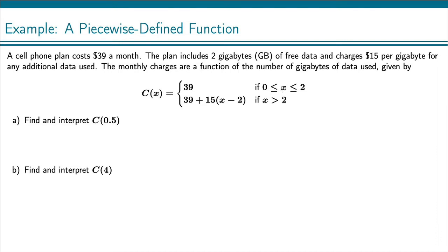That means that whatever number I plug into this function, if it's between 0 and 2, the function outputs just 39. C(x) is equal to 39 + 15(x - 2) if the x value that you plug in is greater than 2. So this is our piecewise defined function.